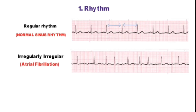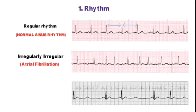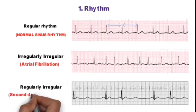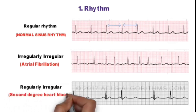Now look at this ECG - normal regular rate with regular drop beat. So rhythm is regularly irregular, which is seen most commonly in second degree heart block type 2.